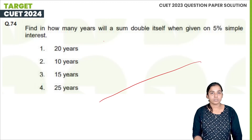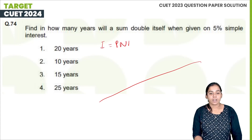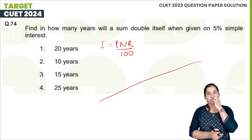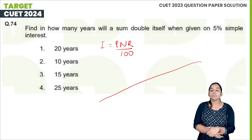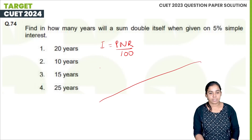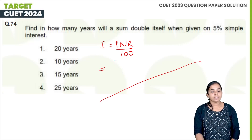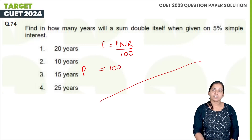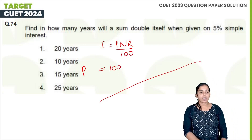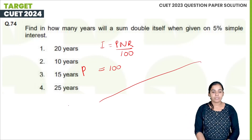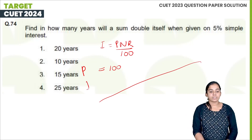I will write the amount. The formula is SI = PNR / 100. If we take P as 100 rupees and the amount doubles, then SI is also 100. So the interest is 100.